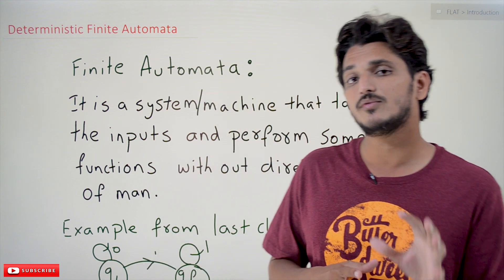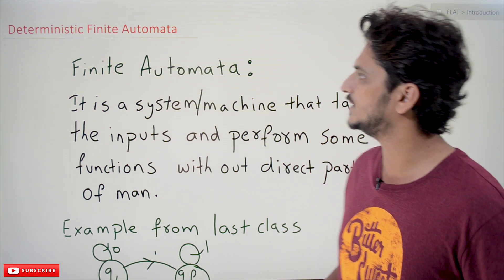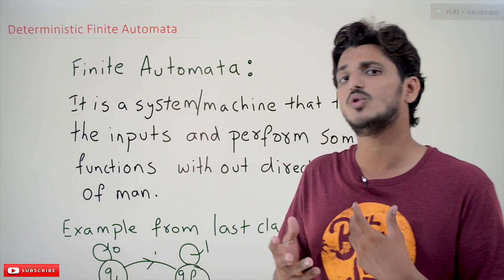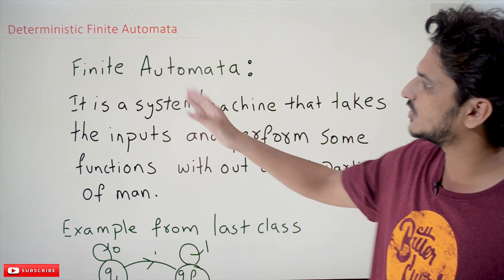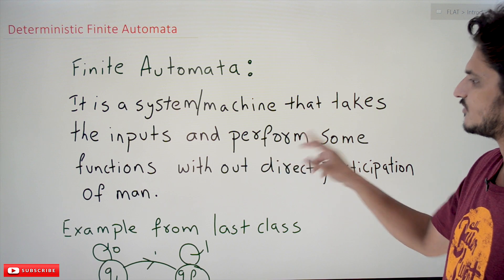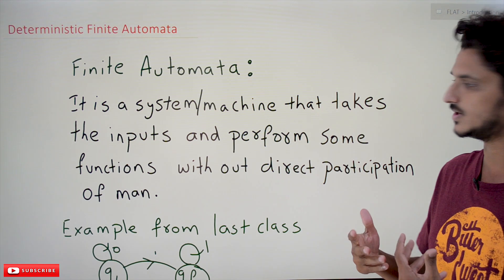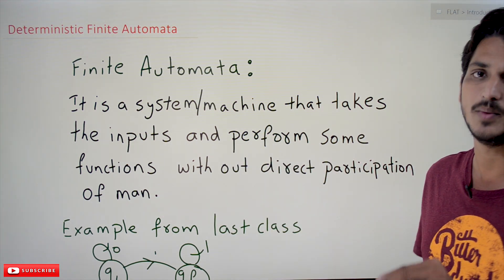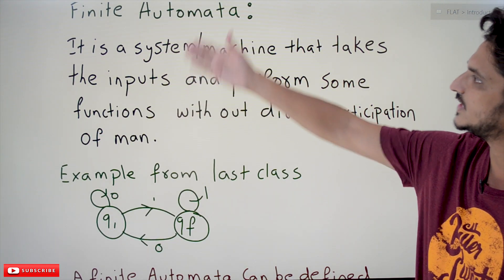Before going into the concept of Deterministic Finite Automata, let's first understand what finite automata means. Automation — we already know what automation means: if something happens without the intervention of a human, we call it automation. Similarly, finite automata is a system or machine that takes inputs and performs some functions without direct participation of a human. If you have finite states, we call it finite automata.